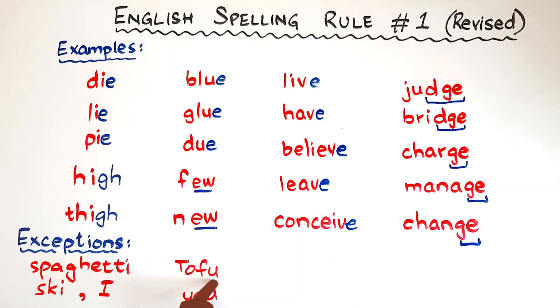Sushi is a Japanese dish. Tofu, we have the U at the end. Again, Japanese dish. Ski is a Norwegian word.